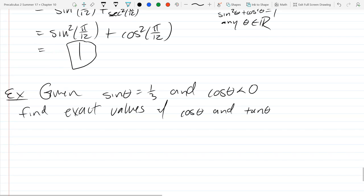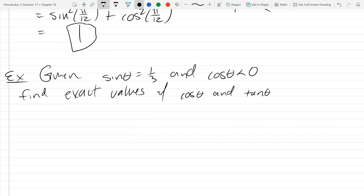Alright, so we've got some information of sine, I want to know about cosine and tangent. So sine, we see right away sine is positive and cosine is negative. So what quadrant does that put us in immediately?